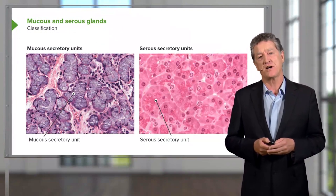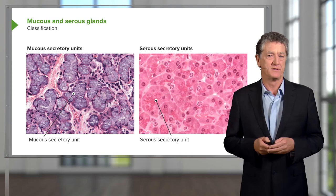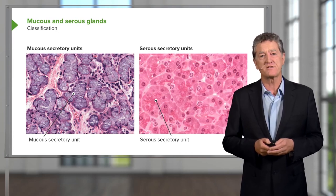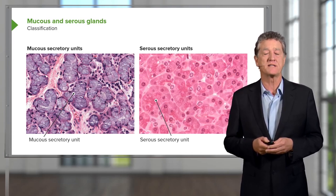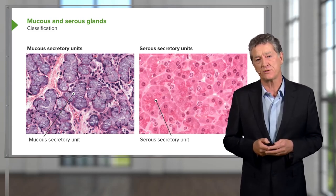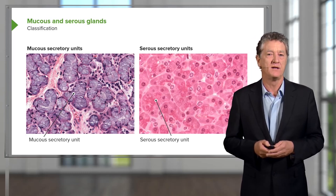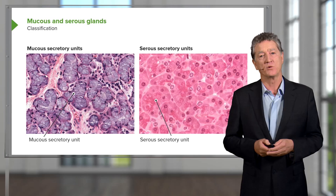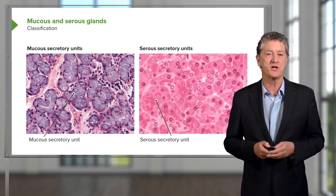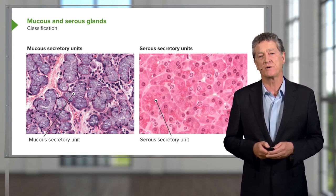On the right hand side, you see serous secreting cells. These are proteins, and if the tissue is preserved very well, you can see little tiny granules containing these protein secretory products stored in small vesicles at the apex of the cells. Often you'll see the rest of the cytoplasm is basophilic, and this reflects the enormous protein factory inside the cell that's making the secretory product.